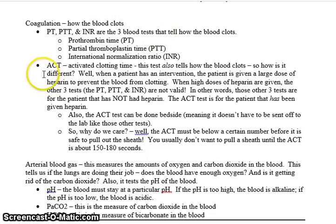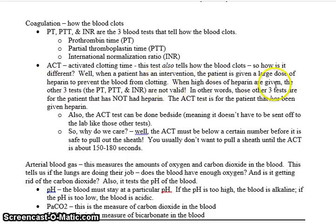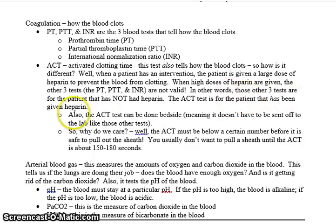The ACT, or activated clotting time, also tells how the blood clots. How is it different? When a patient has an intervention, they are given a large dose of heparin to prevent the blood from clotting. When high doses of heparin are given, the other three tests — PT, PTT, and INR — are not valid. Those three tests are for patients who have not had heparin; the ACT test is for patients who have had heparin.